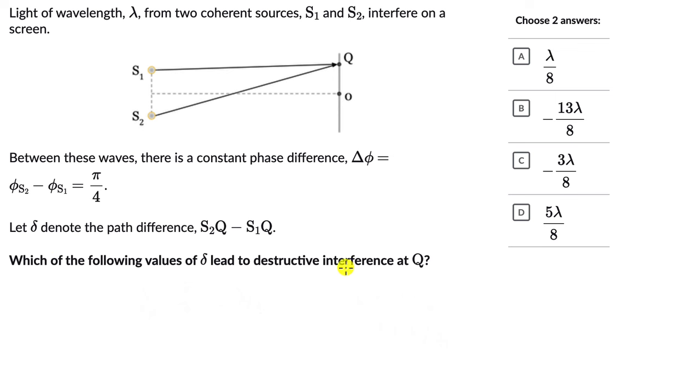First we can try and recall what led to destructive interference in the first place. When the crest of one wave interferes with the trough of another wave, that leads to destructive interference, right?